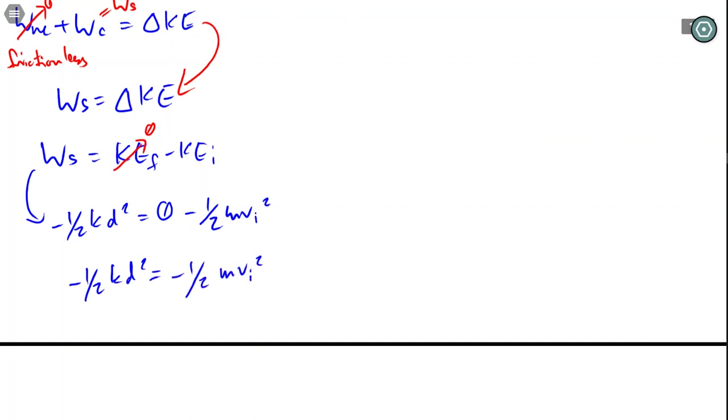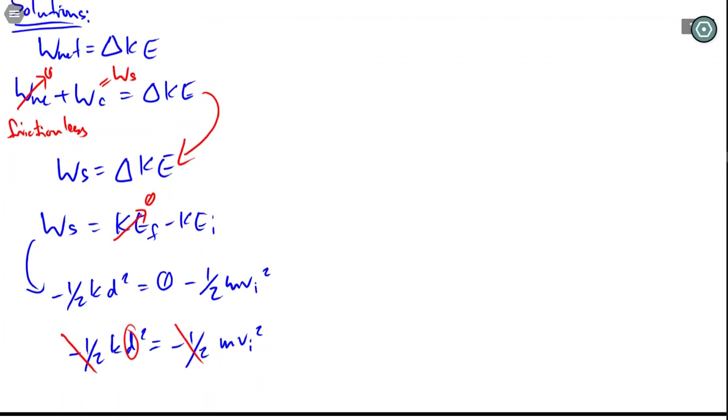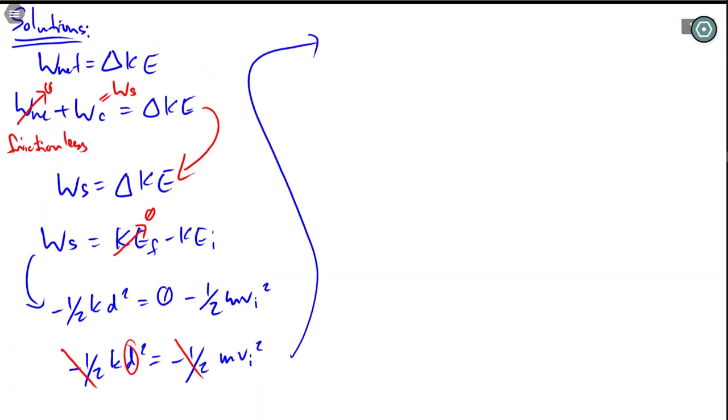Almost there. The negative one half actually goes away. Remember we're trying to solve for d, the distance that the spring is compressed. So what are we left with? k d squared. Divide both sides by k.